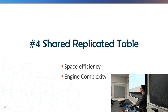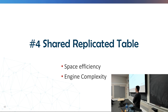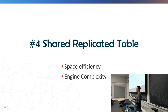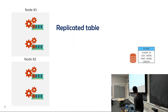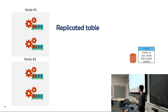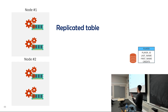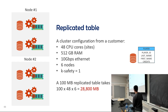A more recent issue we addressed is the shared replica table. As servers increasingly have 32 or even 48 cores, having each partition store a complete copy of a replica table wastes enormous memory — 100 megabytes per partition times many cores on many nodes adds up very quickly. The solution is to have each node store only one complete copy of the replica table rather than having each partition store a separate copy, dramatically reducing memory consumption.